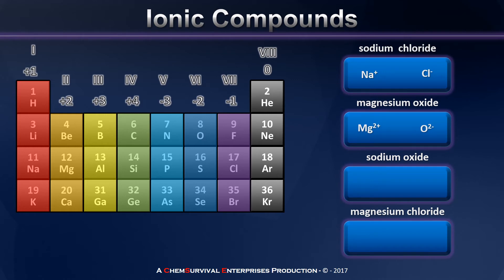Magnesium and oxygen, on the other hand, tend to form ions with charges of plus two and minus two, involving the exchange of two electrons. Nonetheless, their ratio is still one to one in order to achieve charge balance. So when we put these two types of compounds together, we see a one to one mole ratio in each case: NaCl for sodium chloride, MgO for magnesium oxide.